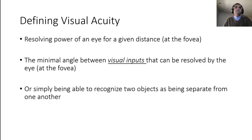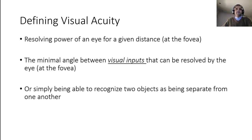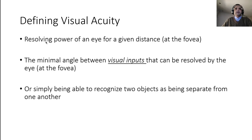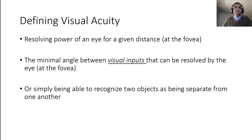Let's define visual acuity first. Visual acuity is your ability to distinguish between two points and recognize them as being separate — in other words, it's the resolving power of the eye. It is the minimum angle between any two visual inputs that can be resolved by the eye, such that they can be detected as being separate.